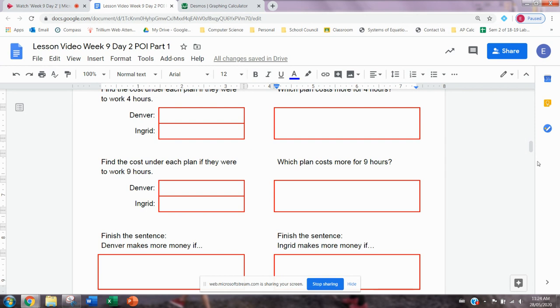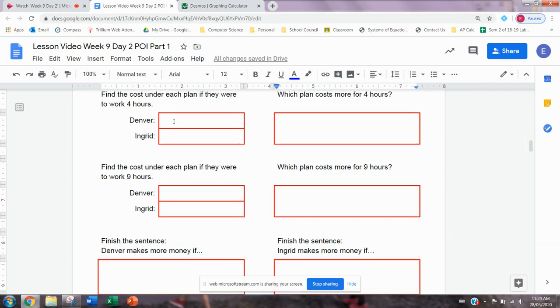So if you hired both kids, they would each charge you the same amount for six hours. The next question says, find the amount that they would charge for four hours. So find the cost under each plan if they were to work four hours. So Denver's pay is 60 plus 15 times the number of hours, which here is four. So I'm going to put in the 60 plus 15. And instead of H, I'm putting a four because it says four hours. So if we do that calculation, 15 times four is 60 and add the 60 initial, he would charge $120. If we do the same calculation with Ingrid's equation, P equals 25 times the number of hours. So 25 times four, Ingrid would charge $100.